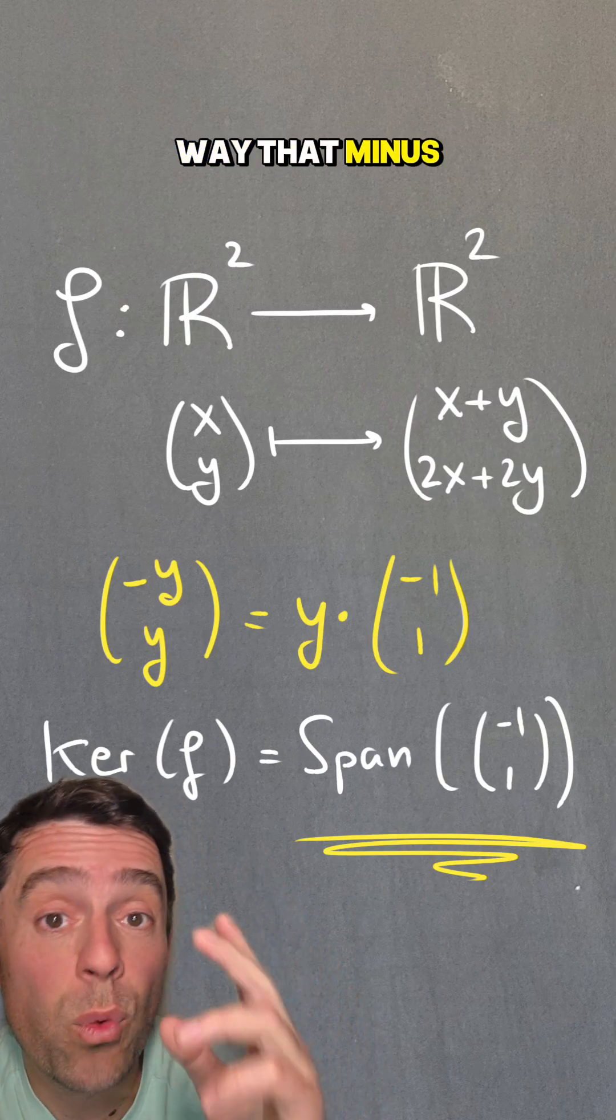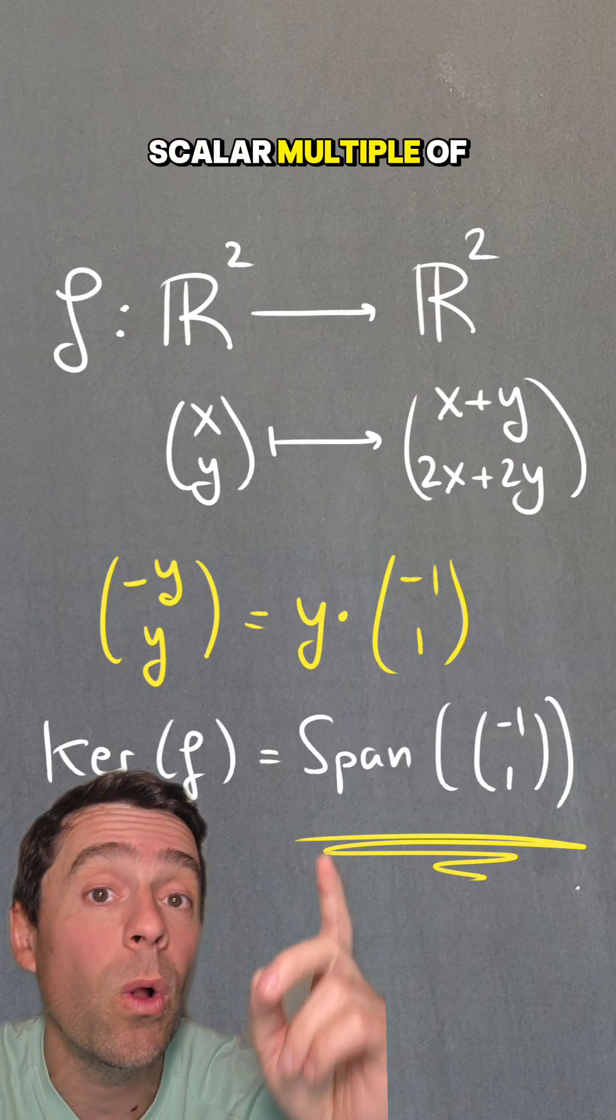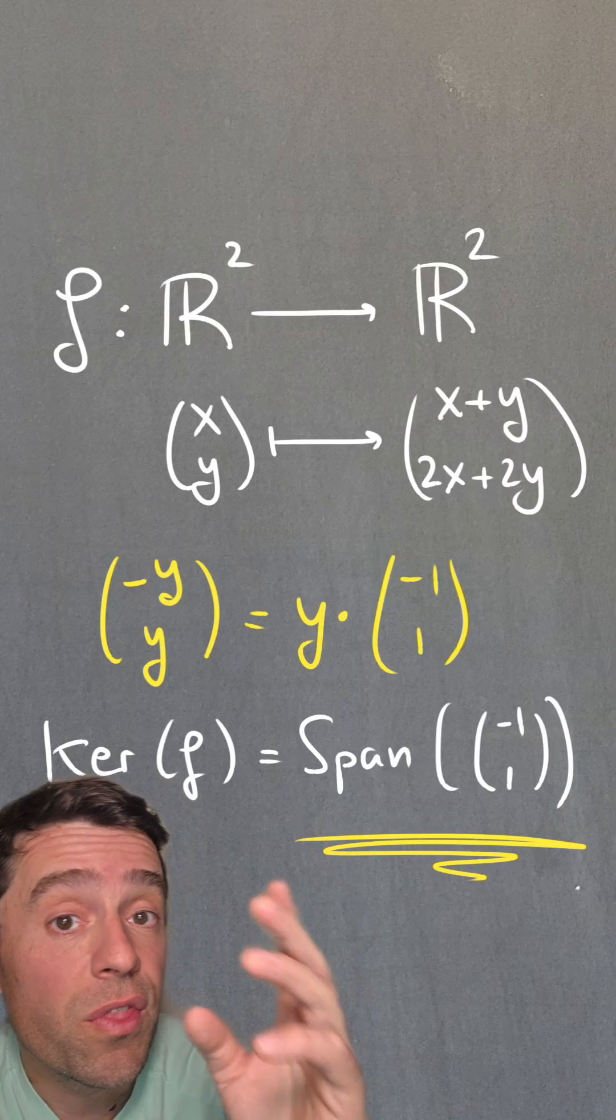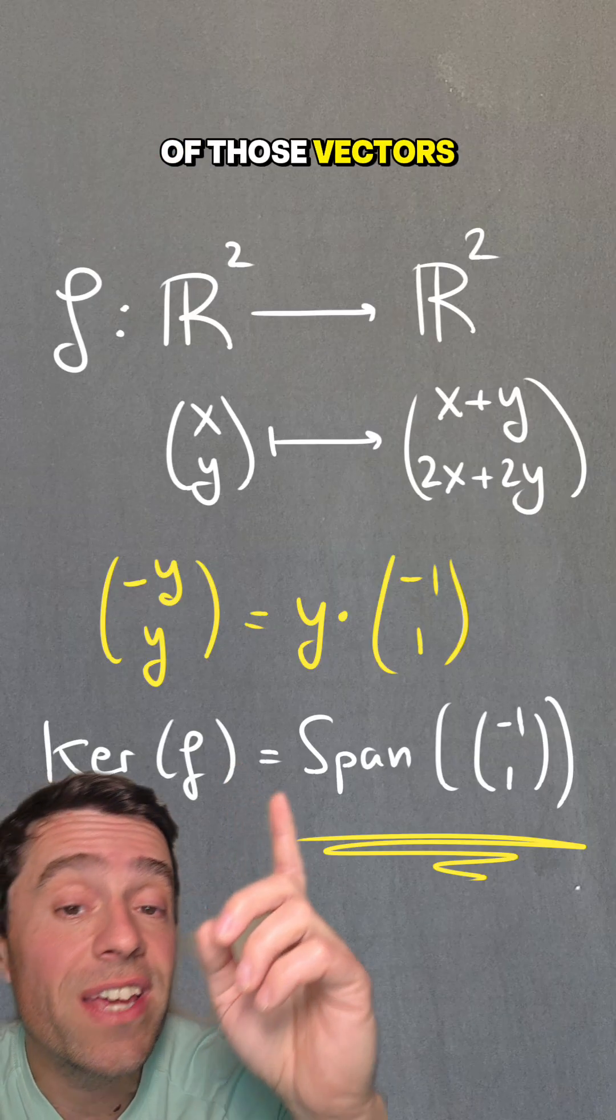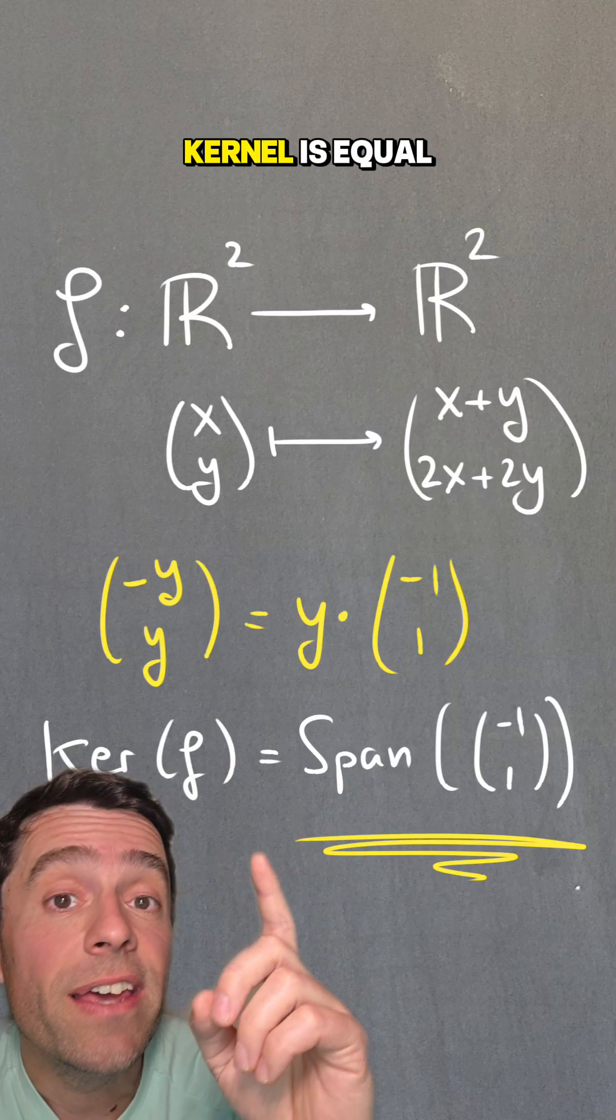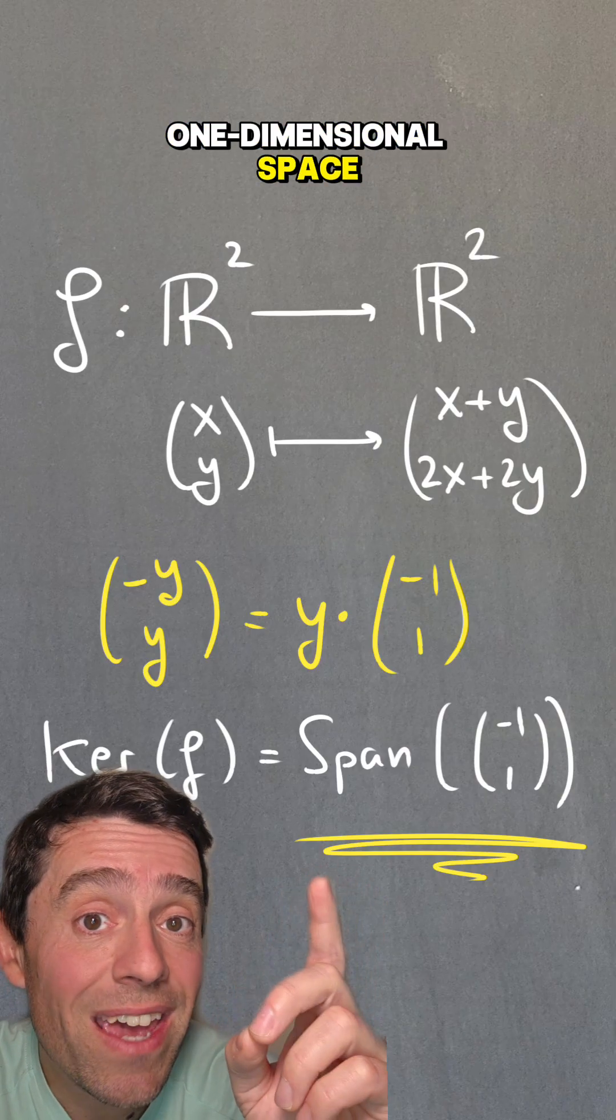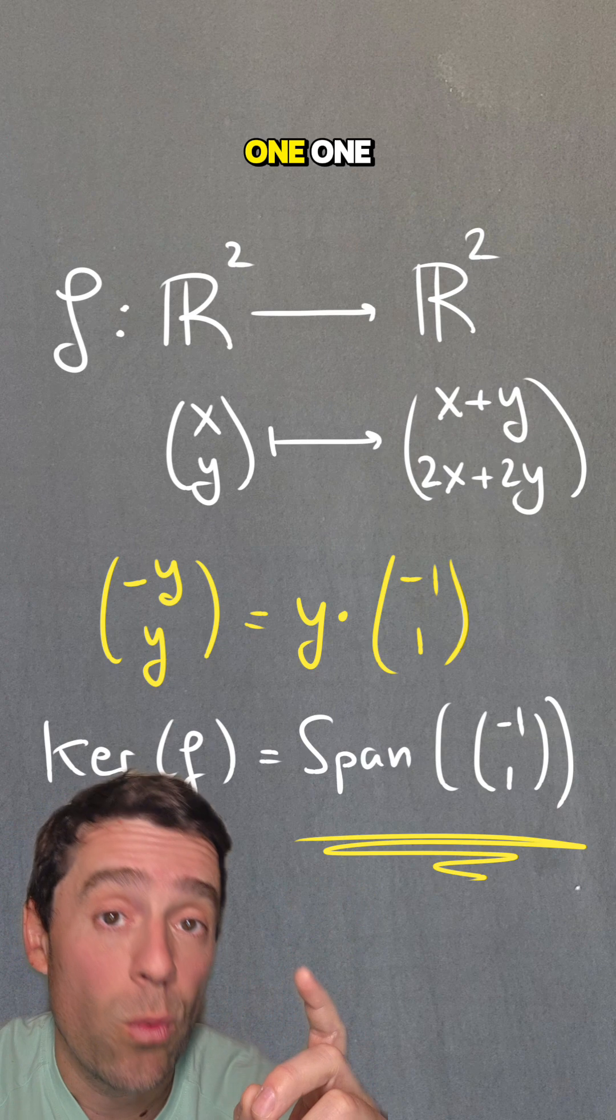Notice, by the way, that (-y,y) is just y times a scalar multiple of (-1,1). Therefore, every one of those vectors is a scalar multiple of (-1,1), and therefore the kernel is equal to the span of (-1,1). So it's a one-dimensional space generated by (-1,1).